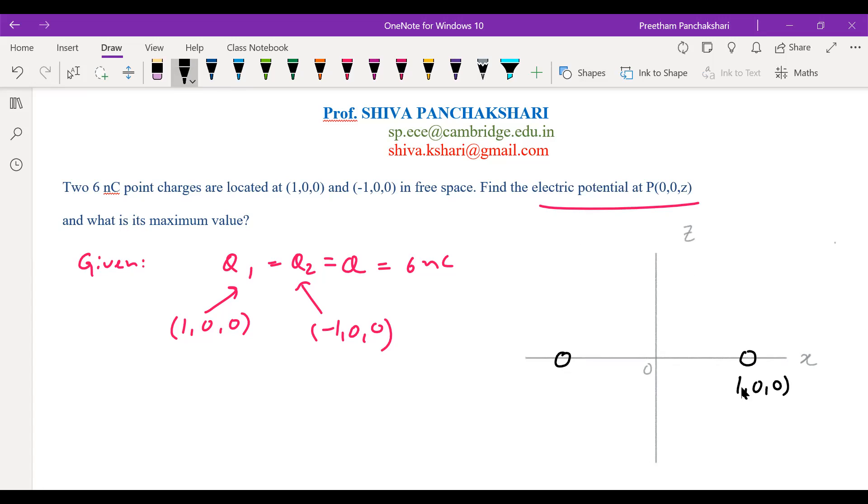One on positive side at (1,0,0), another one on negative side with (-1,0,0). So we need to find potential at a point on z-axis.